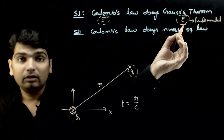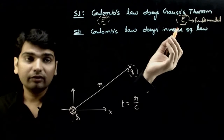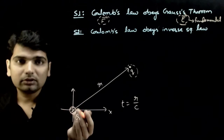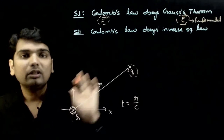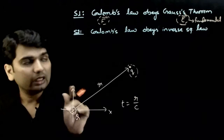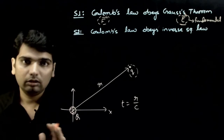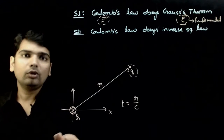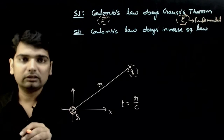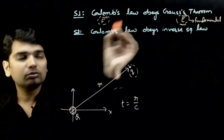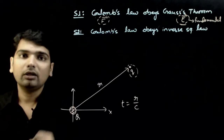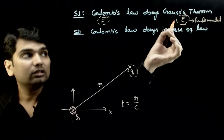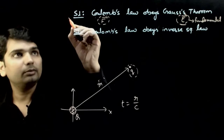And that something is the electric field. So electric field is more fundamental. We can derive Coulomb's law from Gauss's theorem and vice versa, but if forced to choose which is more fundamental, Gauss's theorem is more fundamental. So we can say Coulomb's law obeys Gauss's theorem — not the other way around. As humans, we observed force more easily, so we formulated Coulomb's law first, but actually Gauss's theorem is better and more fundamental. Statement 1 is completely correct.